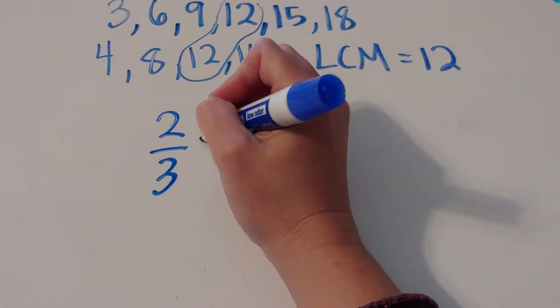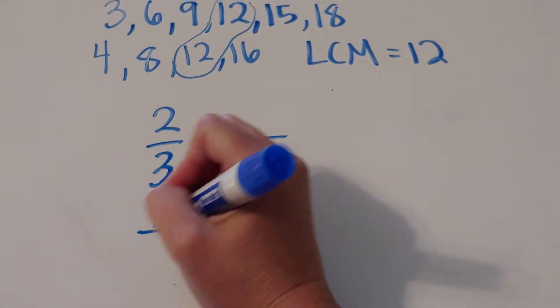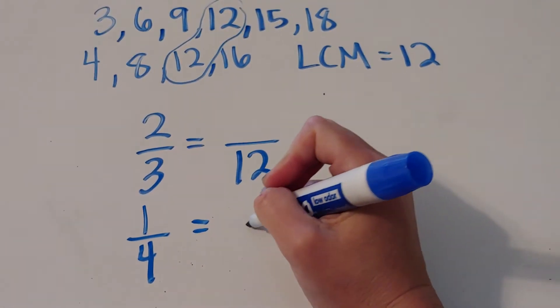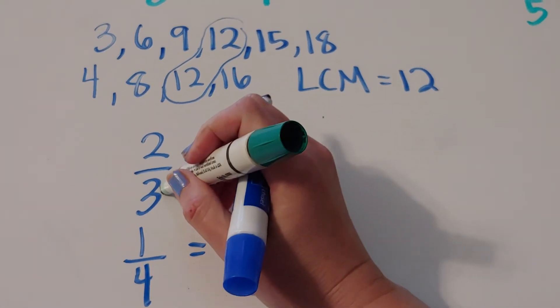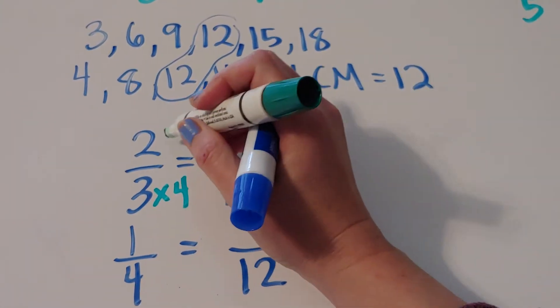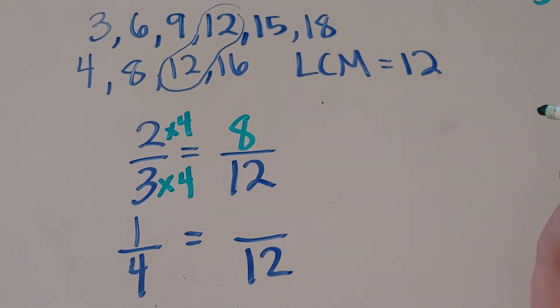So I want 2 thirds to turn into a denominator of 12. And then I want 1 fourth to turn into a denominator of 12. So what we have to do is we have to think of 3 times what gives me 12, and that's 4. So I'm going to have 8 twelfths is the same thing as 2 thirds.